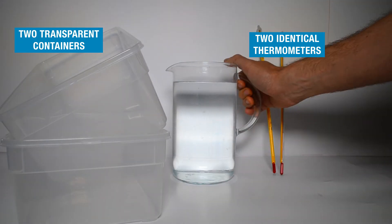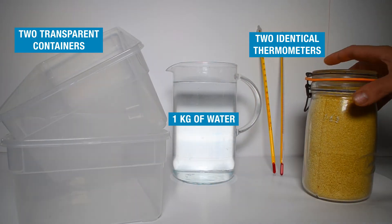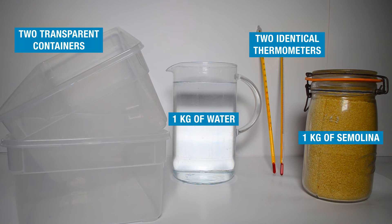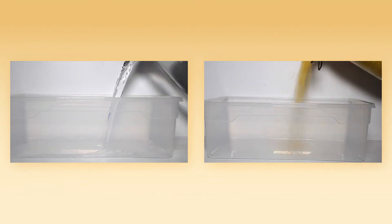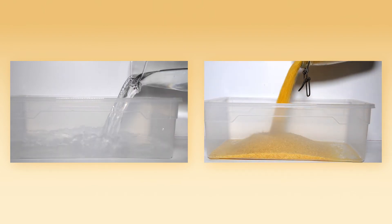Thus, we need one kilogram of water and one kilogram of semolina or rice, sand, or dirt. We pour the water in one container and then the semolina in the other.